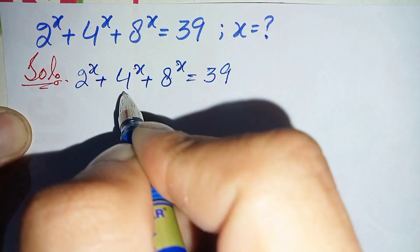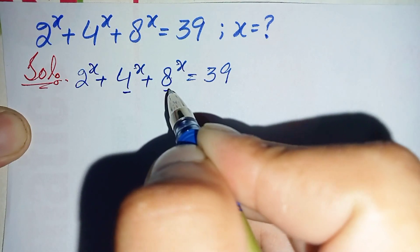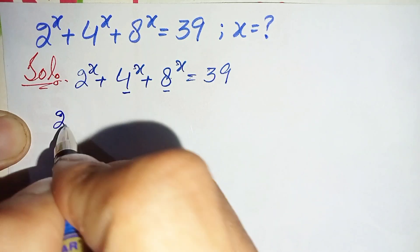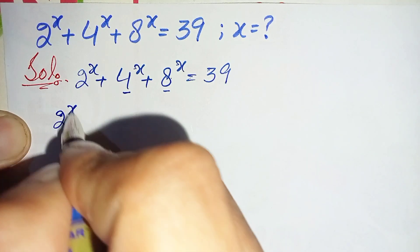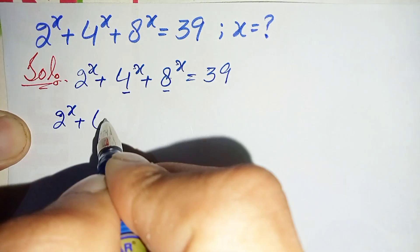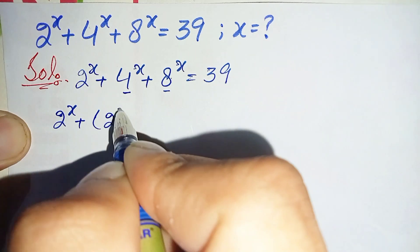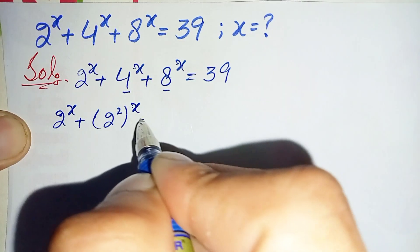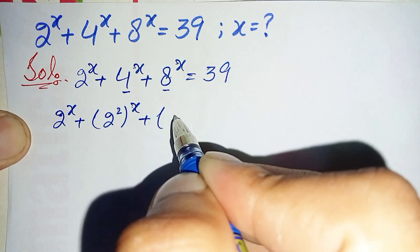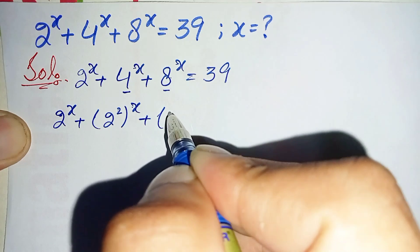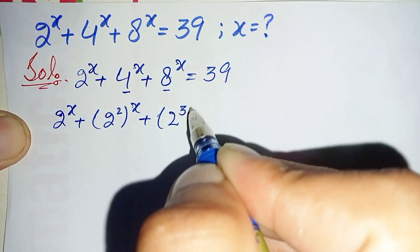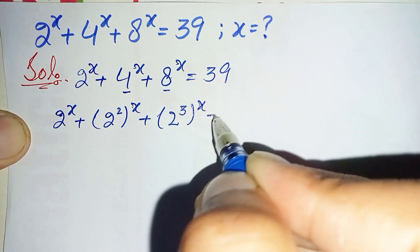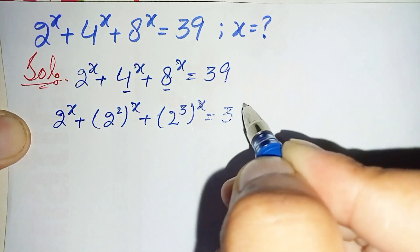Next we will change these two bases to their exponential form. So this will become 2 raised to power x, plus we can write 4 as 2 raised to power 2, raised to power x, plus we can write 8 as 2 raised to power 3, raised to power x, is equal to 39.